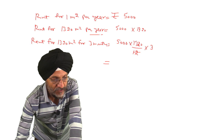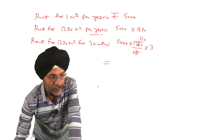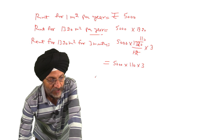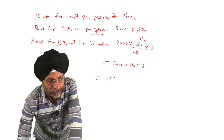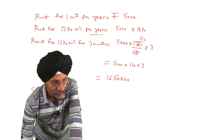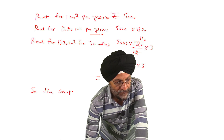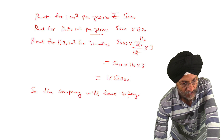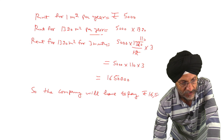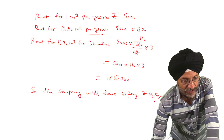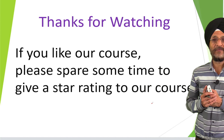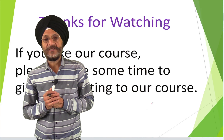So: 5000 × 1320 ÷ 12 × 3 = 5000 × 110 × 3 = Rs. 16,50,000. The company will have to pay Rs. 16,50,000. Thanks for watching. If you like our course, please take some time to give a star rating to our course.